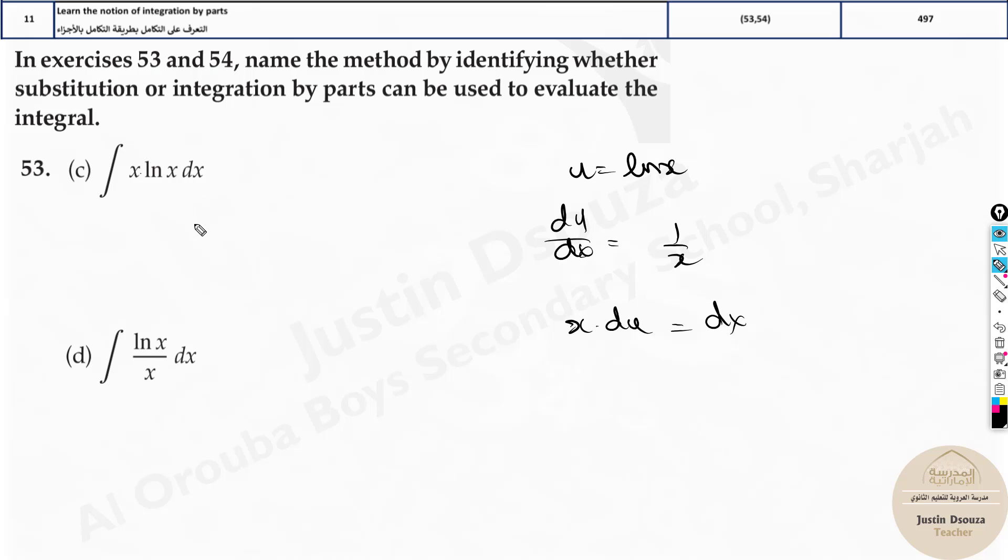Now if you substitute back dx, what's happening? You will have x du. You will have ln u and x. It just becomes worse. x and x, it becomes x squared ln u. There's no way you can solve this. With respect to du, it's not possible. So when you multiply a natural logarithm with x, it is integration by parts directly.